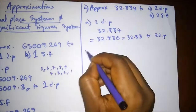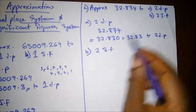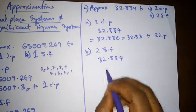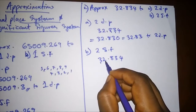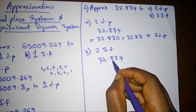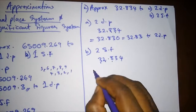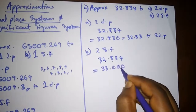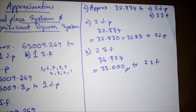For part (b), approximating 32.834 to two significant figures: we count from the first non-zero digit — one, two — giving us 3 and 2. The next digit is 8; since 8 is 5 or above, we round up. We add one to the 2, making it 3. Our answer to two significant figures is 33.000, or 33.